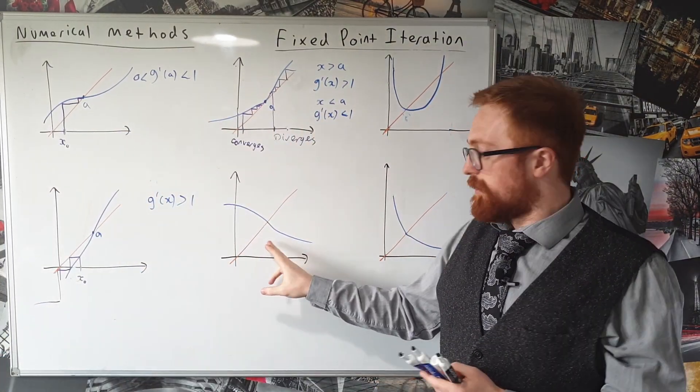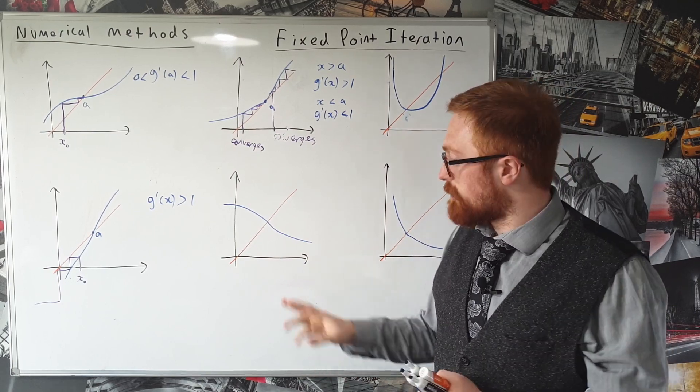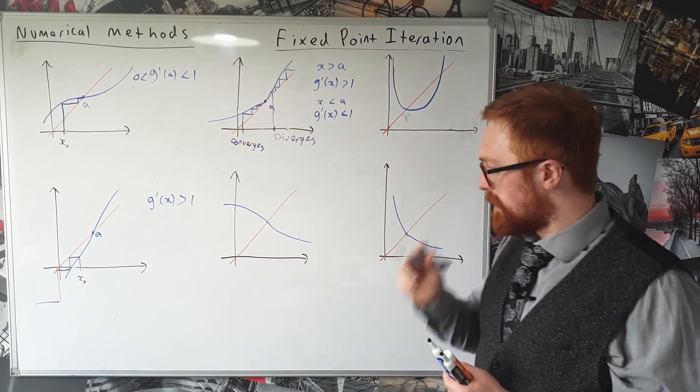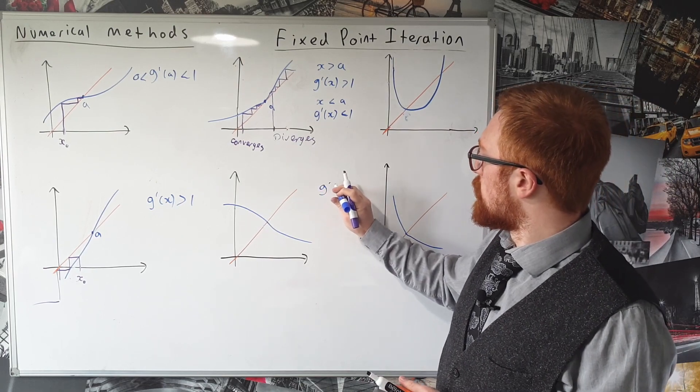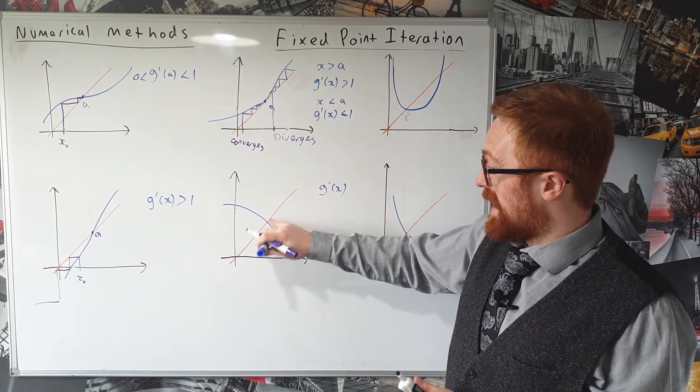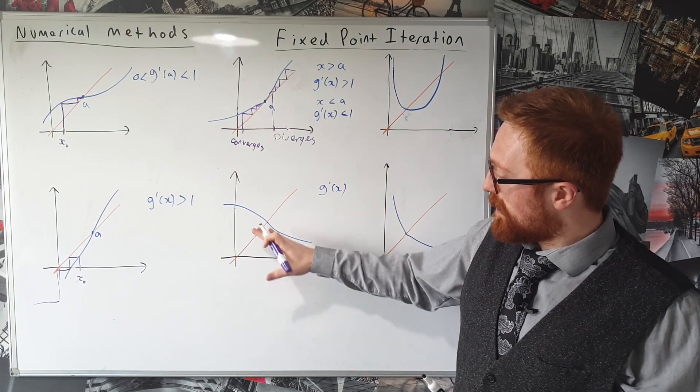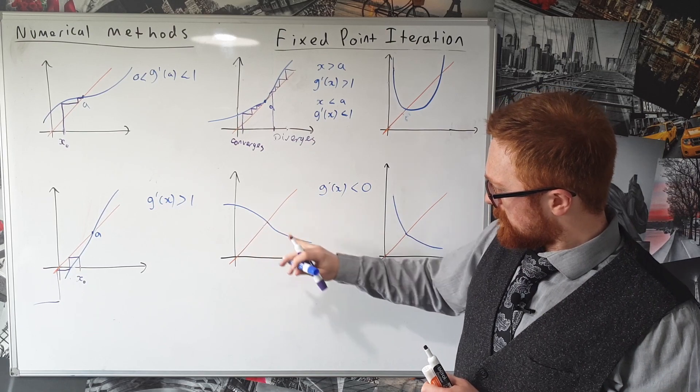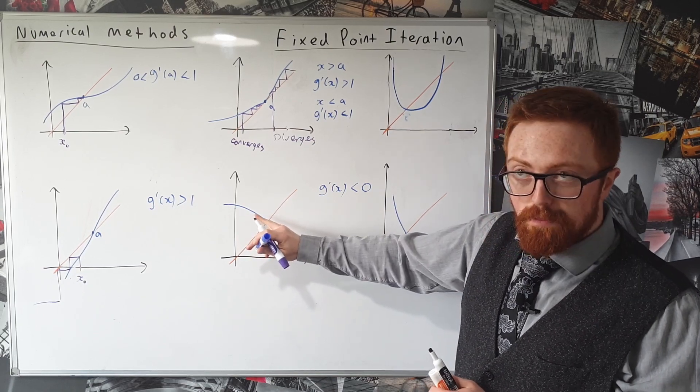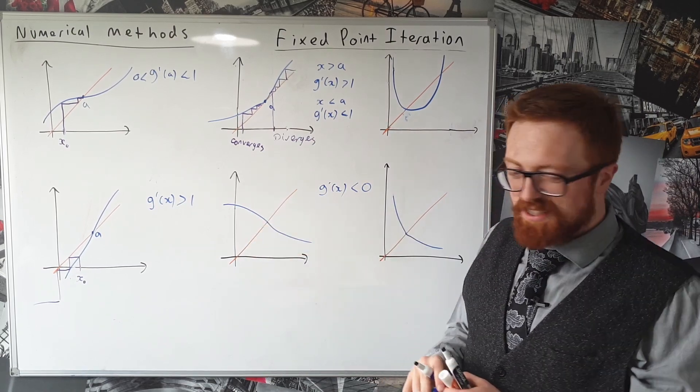But this one's going to be slightly different, it's going to give us a different type of diagram, which we've already seen, actually. So here we have g of x, or the gradient of x, in this neighbourhood. Now this time it's negative, so it is less than zero, but it is still bigger than negative one.